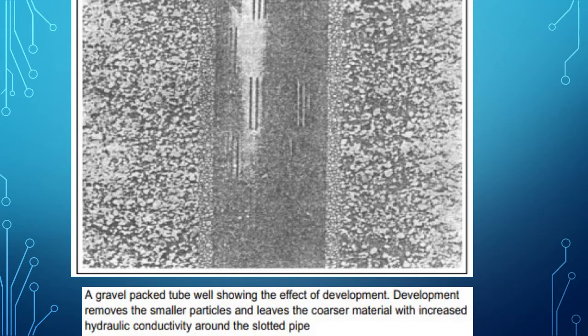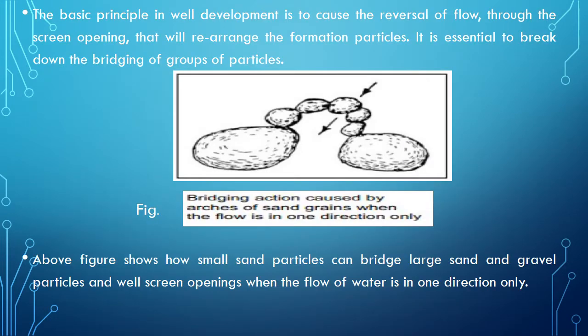The purpose of well development is to increase hydraulic conductivity, porosity, or transmissibility in the immediate vicinity of the slotted pipe or well screen, and to increase the effective radius so the yield of the well will increase after well development. The basic principle in well development is to cause the reversal of flow through the screen opening, which will rearrange the formation particles.